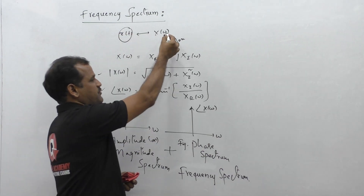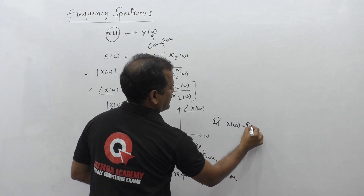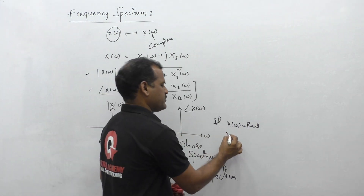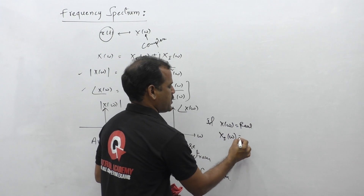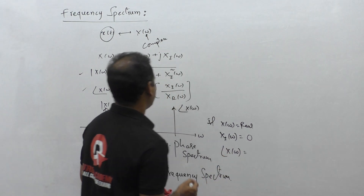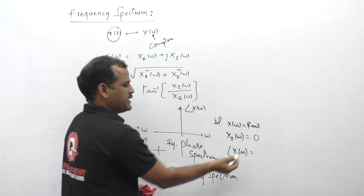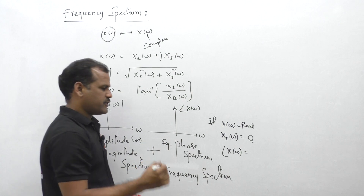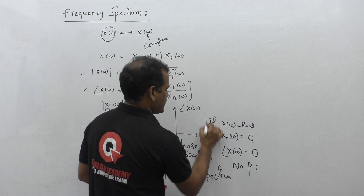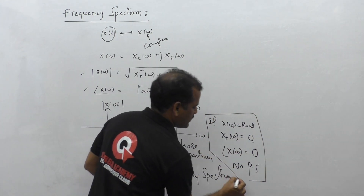In case X of omega is a pure real quantity — not a complex quantity — that means the imaginary part is 0. If the imaginary part of X of omega is 0, what is the phase? Using the formula tan inverse of imaginary part upon real part: tan inverse of 0 is 0. So the phase is 0, meaning there is no phase spectrum for a signal whose Fourier transform is a pure real expression.